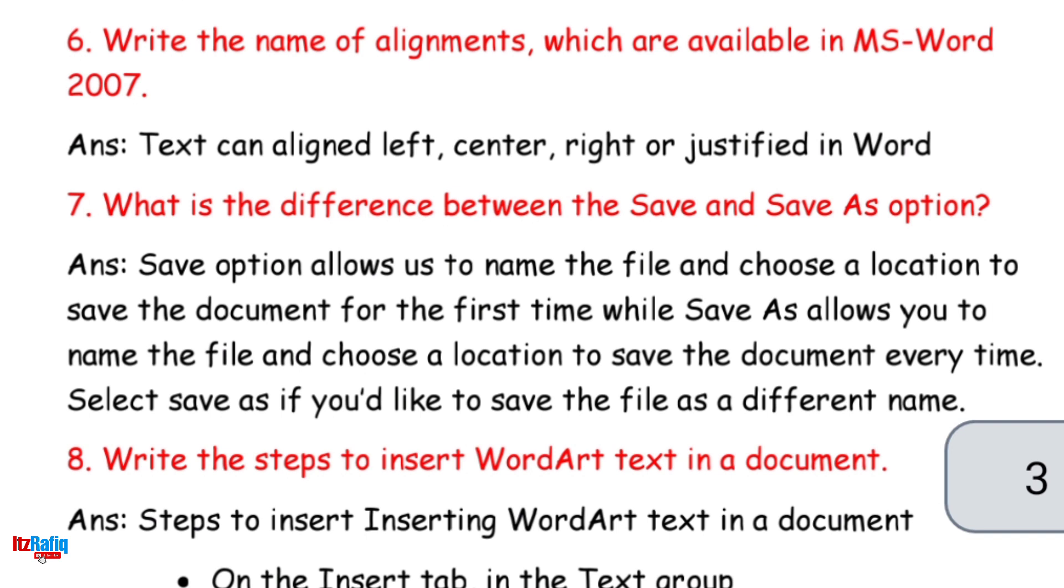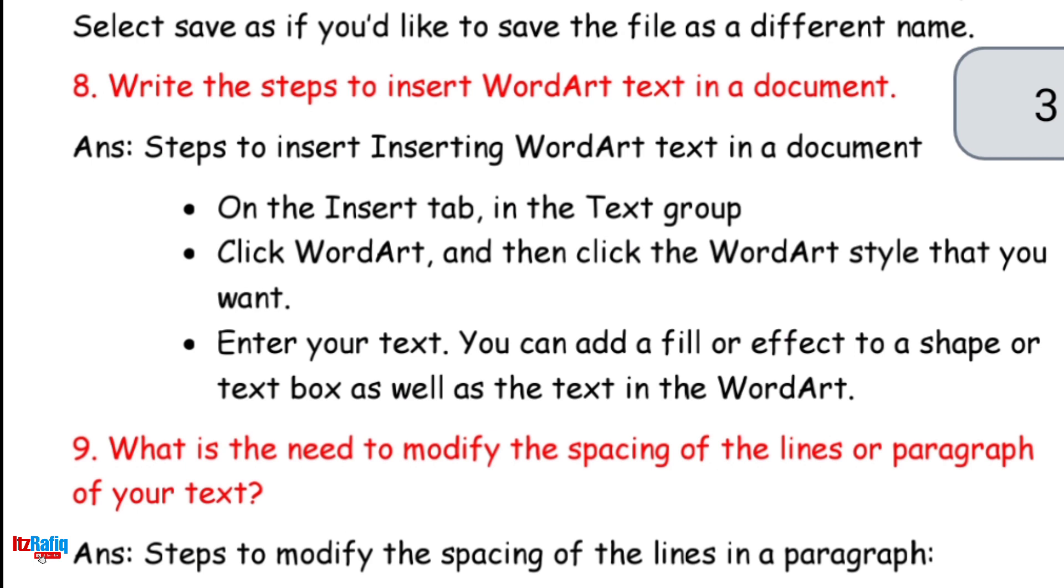8. Write the steps to insert WordArt text in a document. Answer: Steps to insert WordArt text in a document: on the Insert tab, in the Text group click WordArt, and then click the WordArt style that you want. Enter your text. You can add a fill or effect to a shape or text box as well as the text in the WordArt.